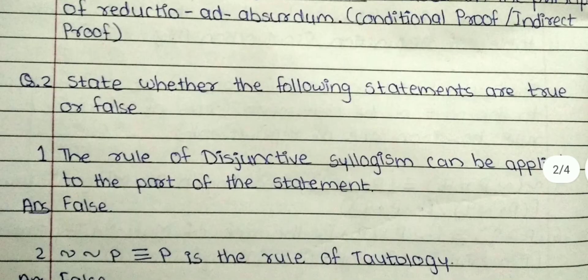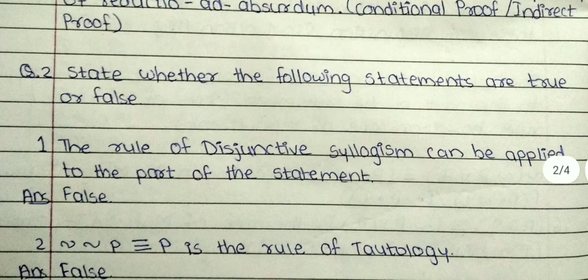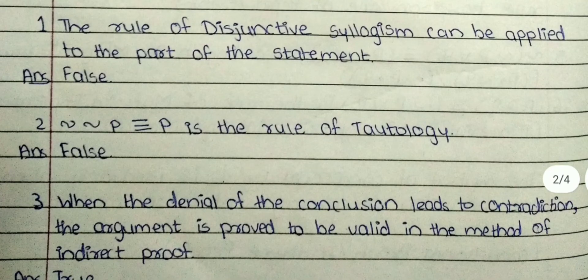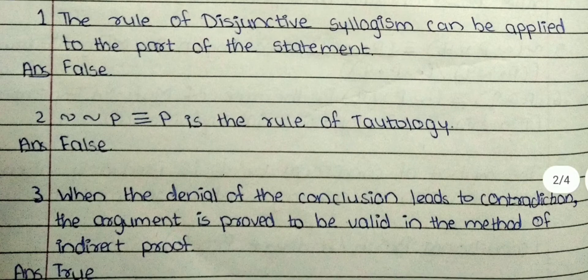Question number 2. State whether the following statements are true or false. First: the rule of disjunctive syllogism can be applied to the part of the statement. The answer is false. Second: negation negation P triple bar P is the rule of tautology. The answer is false.